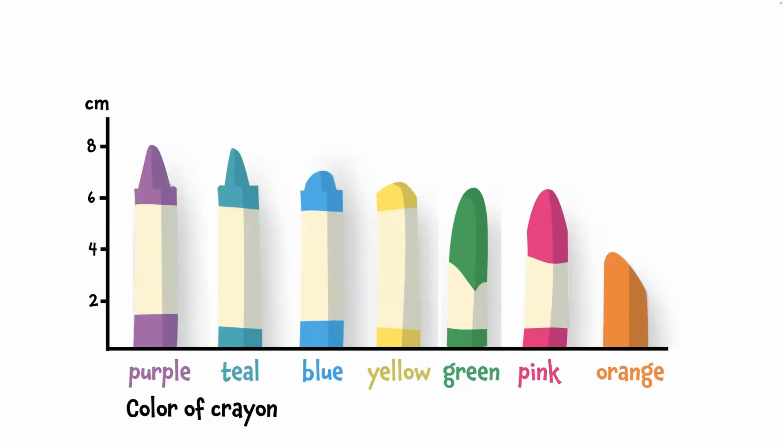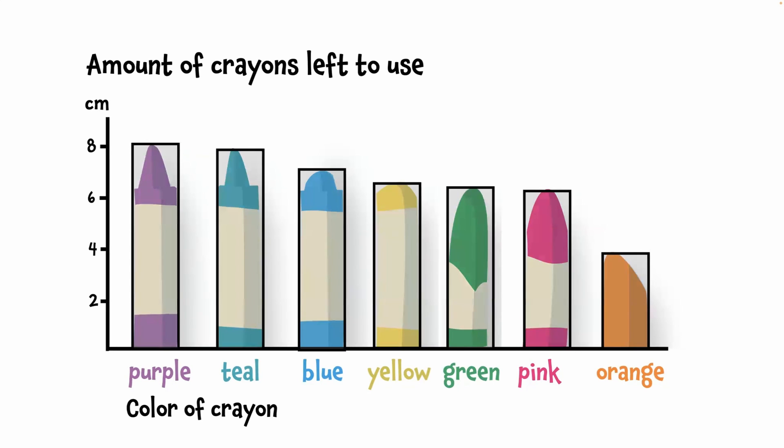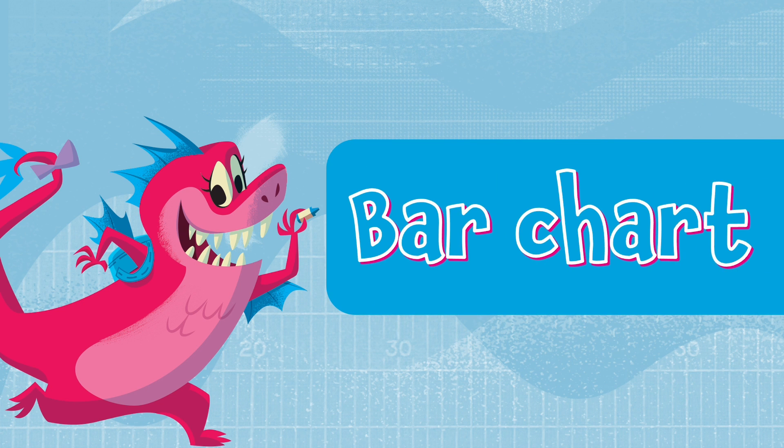It's also a good idea to add a title to the overall graph that helps make it clear what we're showing. Amount of crayons left to use. In a more typical bar chart, instead of crayons, we'd use rectangles to show the values. I can take away the crayons, and now we have a bar chart.